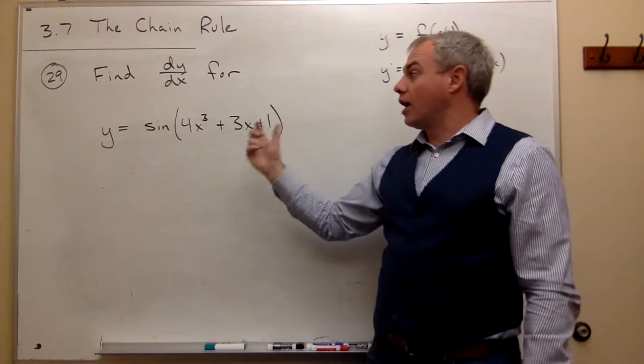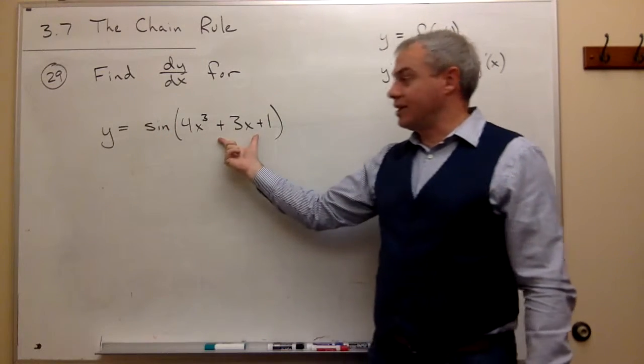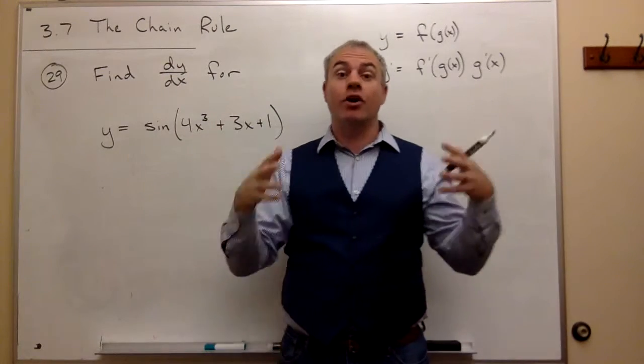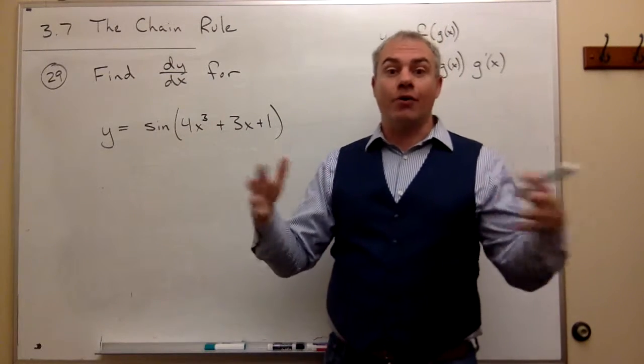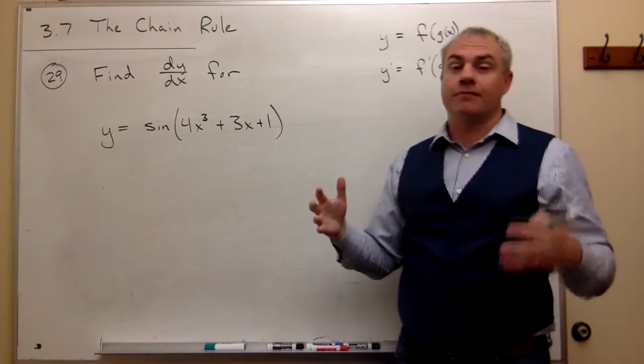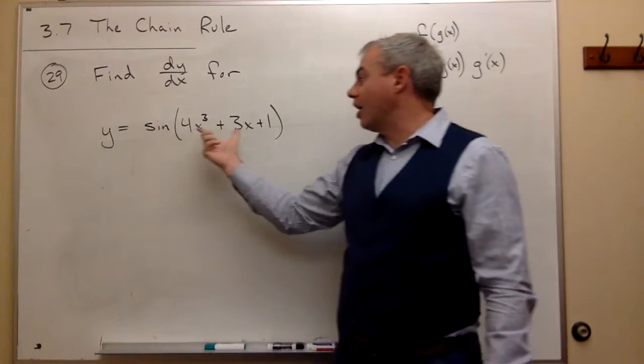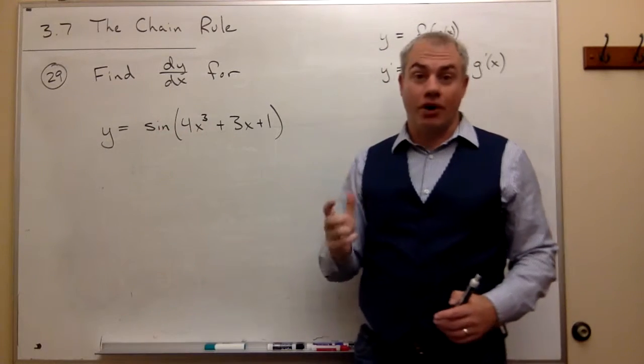right? So I would sign all this stuff in the middle. So sine is the most outer function. It's the outermost thing happening here. Since it's the outermost thing, I want to take the derivative of sine of something first.